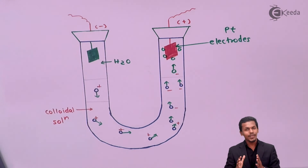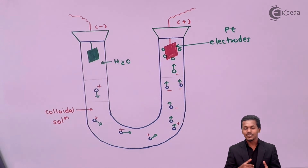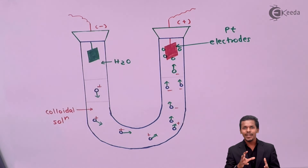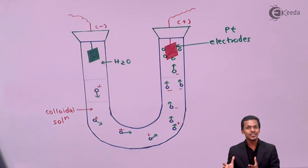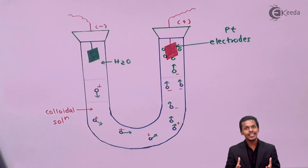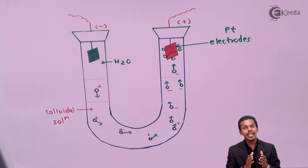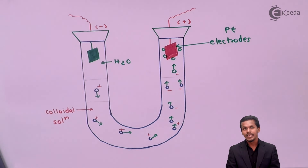Now let us move on to the applications of electrophoresis. First, by doing this process we can easily determine whether the colloidal particles present in the colloidal solution — the dispersed phase — are positive or negative in charge. Second, we can also determine the rate of electrophoresis — that is, the migration rate at which a particular colloidal particle transfers to its respective electrode in a given amount of time.